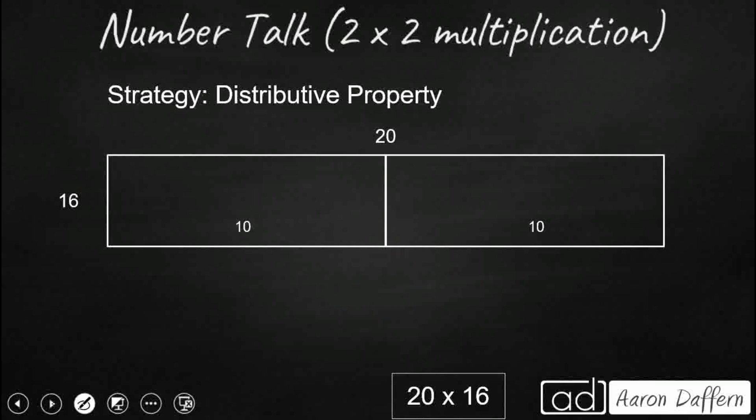We also could use the distributive property. So this is the property that lets us break apart one of our factors into two addends just to make it a little bit easier to multiply. So you see we're going to take our 20. I want to break this up into a 10 plus 10.